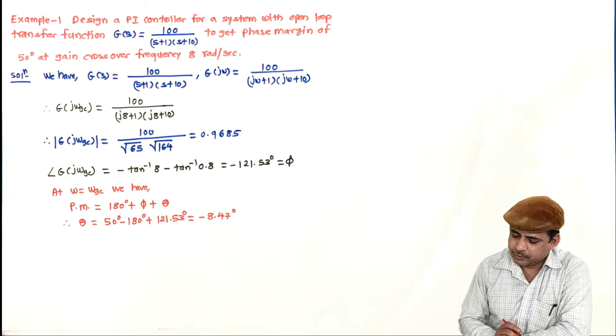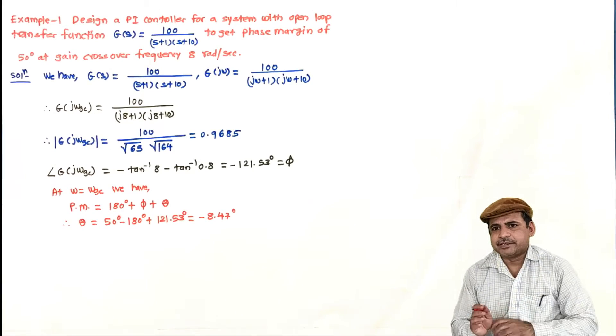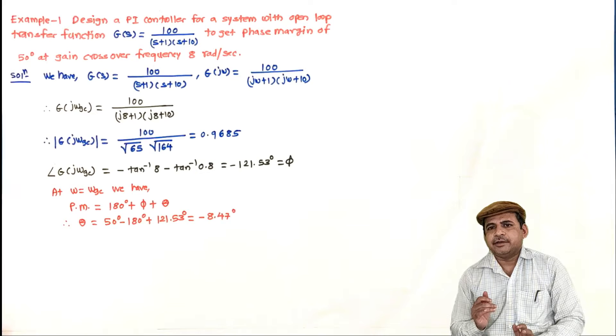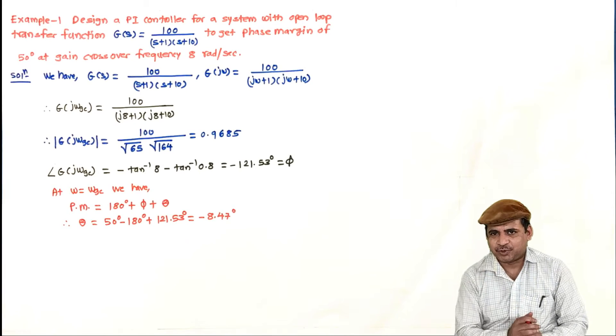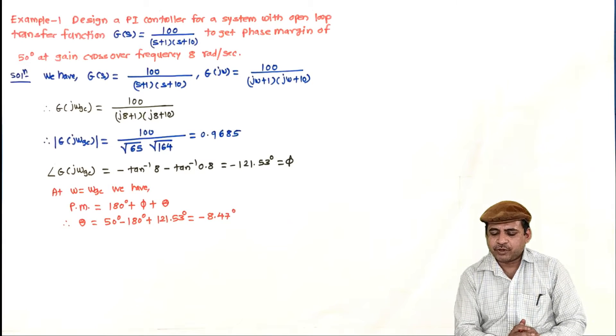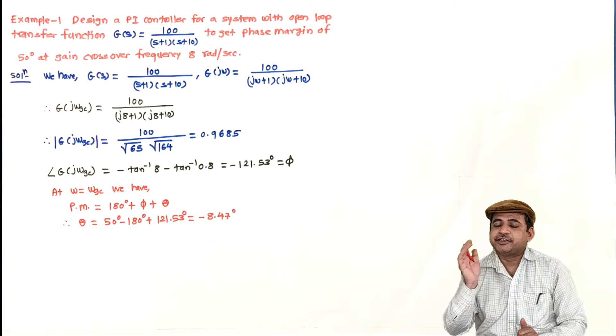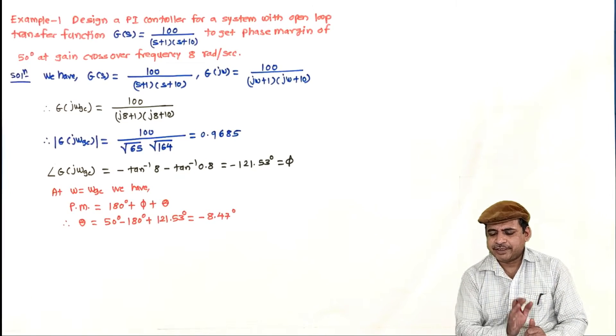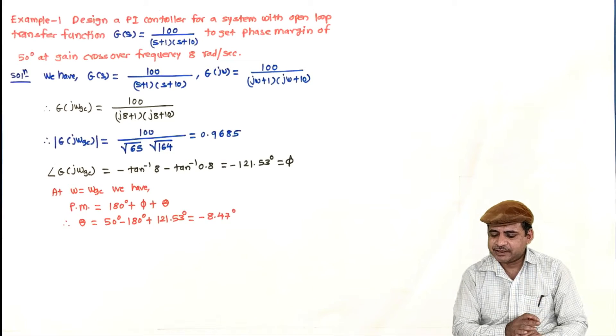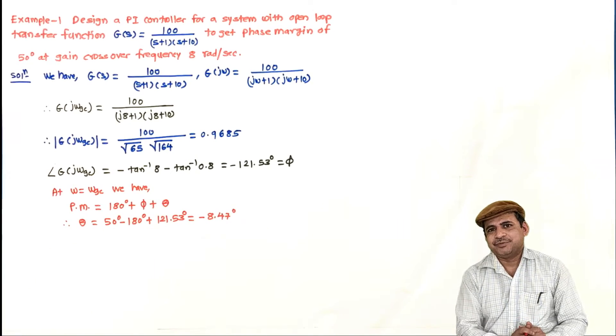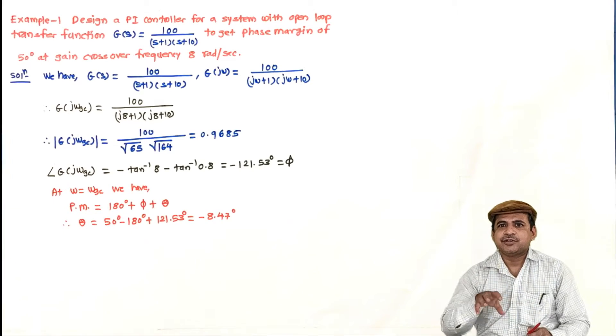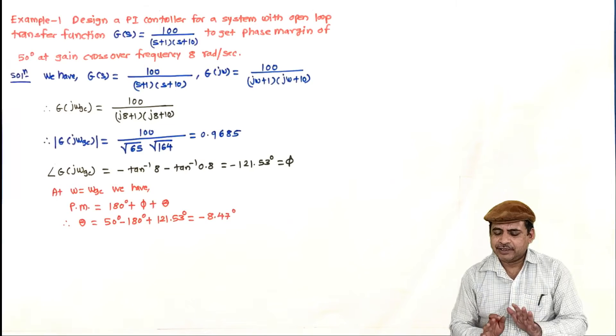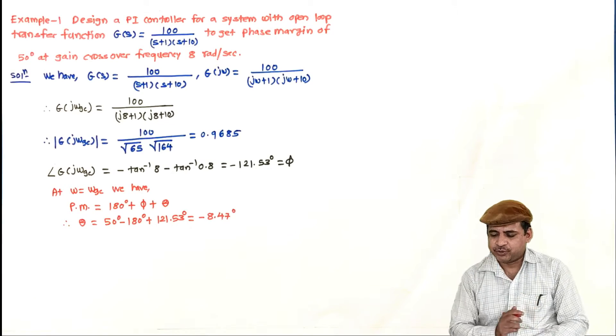And always see, PI controller is not used for improvement in the phase response. It is always used for the improvement in the steady state response. Transient performance is never improved. That is why in most cases you will get θ negative. That means negative θ means phase is lagged by the controller. But still steady state performance will be achieved.